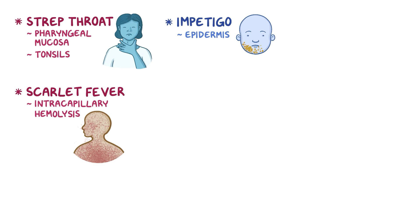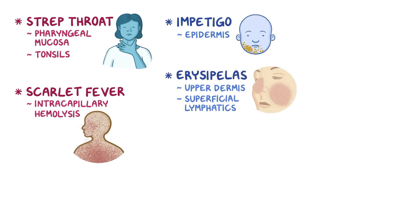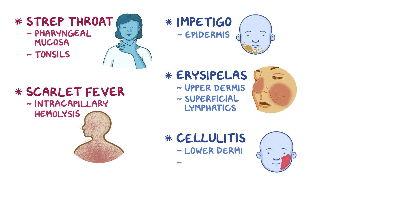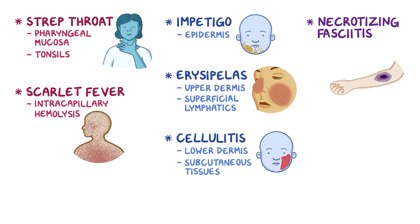If the bacteria invades deeper, it can infect the upper dermis and superficial lymphatics, causing a skin infection called erysipelas. If it gets to the lower dermis, it's called cellulitis — an acute, painful, quick-spreading infection of the lower dermis and subcutaneous tissues. Sometimes the infection can spread even deeper to the muscle fascia, causing necrotizing fasciitis, where the muscle fascia and subcutaneous tissue are destroyed in a process called necrosis.